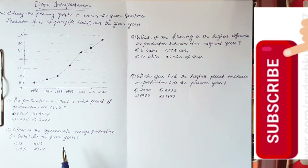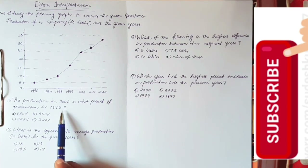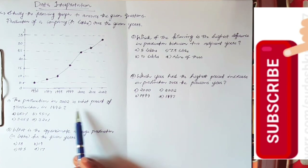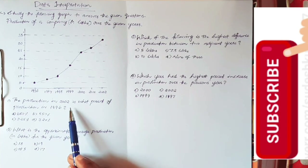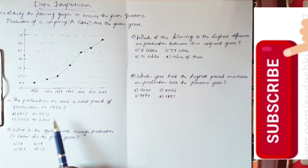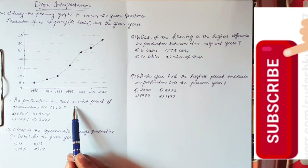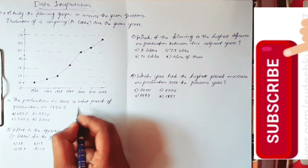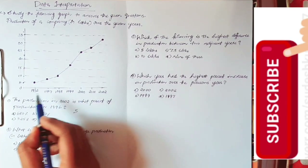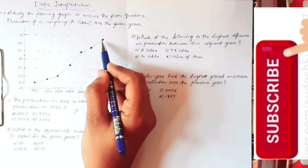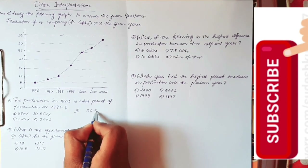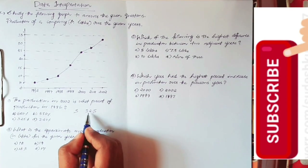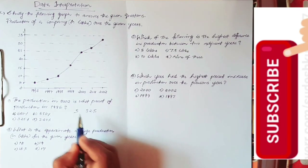The first question: the production in 2002 is what percent of production in 1996? How much percentage of production in 1996 is the production in 2002? The production in 2002 is 32.5 lakhs. So 32.5 is the percentage of the 5 lakhs.